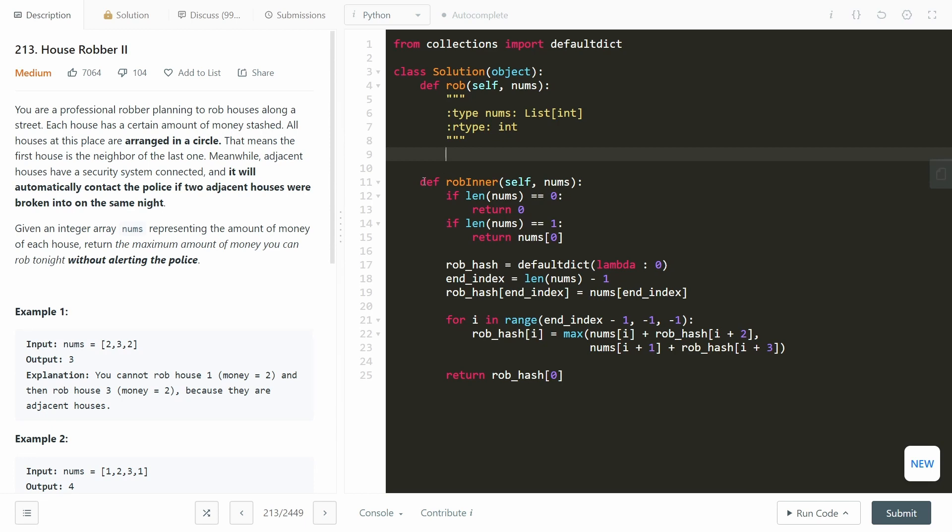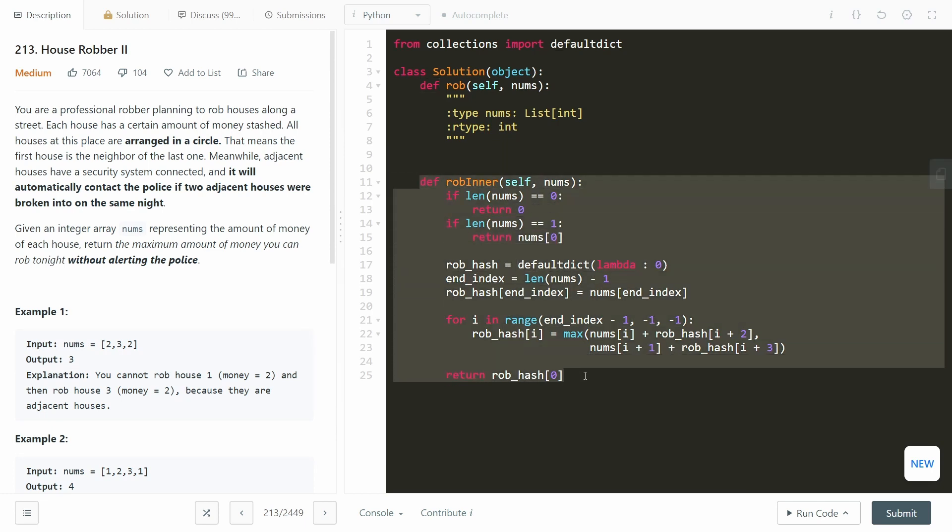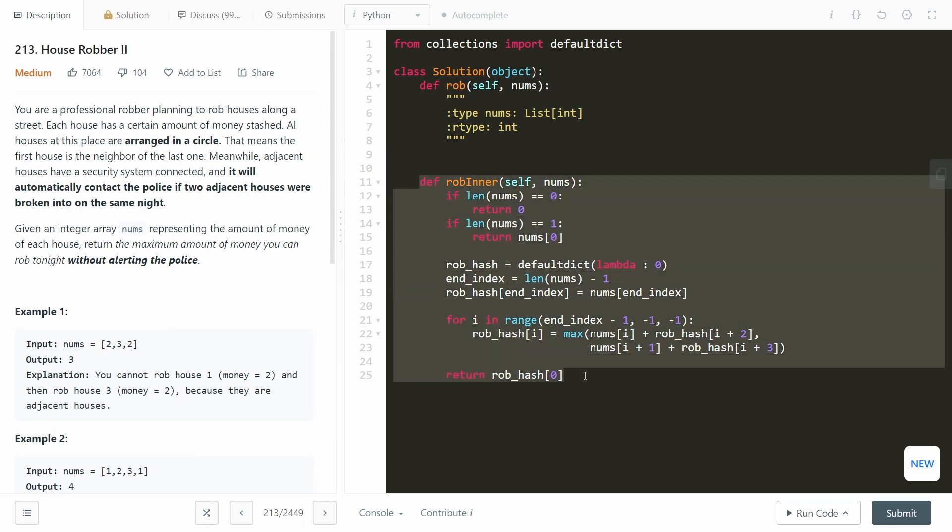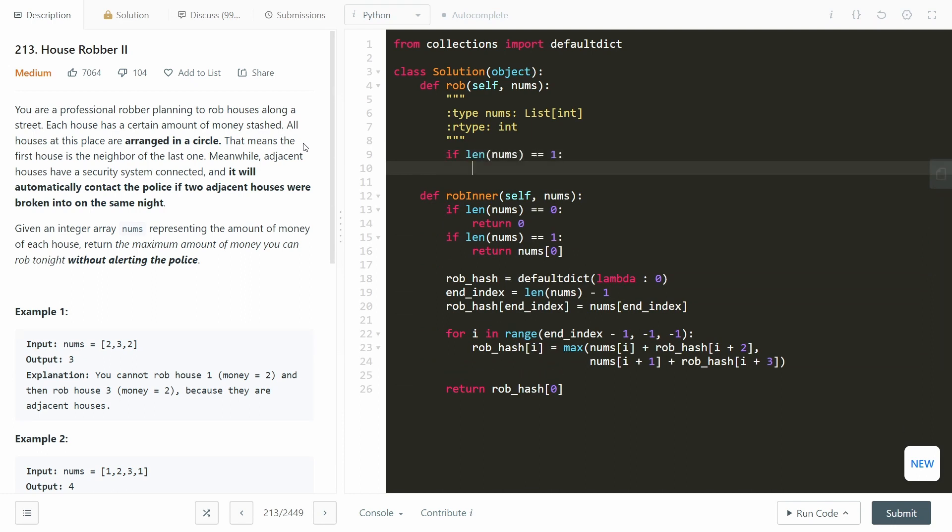So I have the code from the original problem here and I called it robinner and we're going to be using this function. So first off let's check if the length of nums is equal to one. We're just going to return nums of zero.